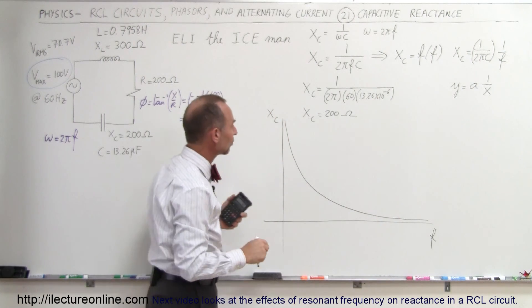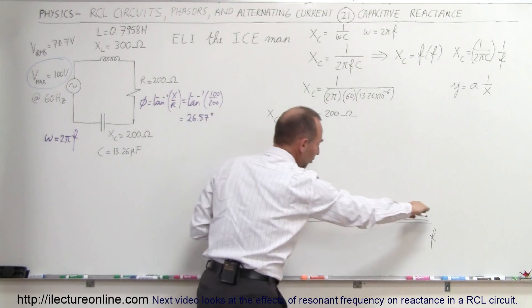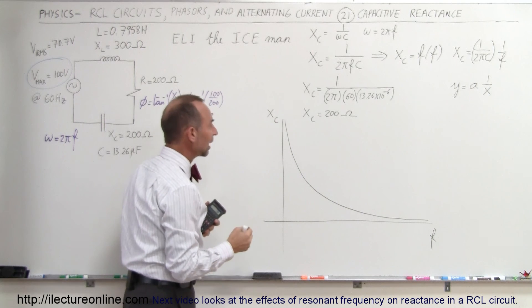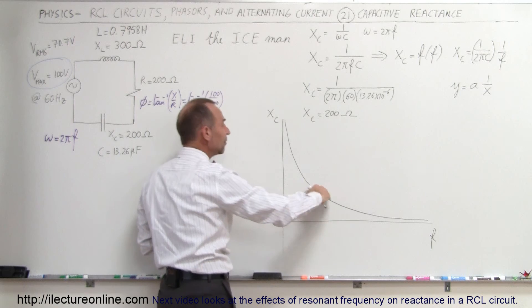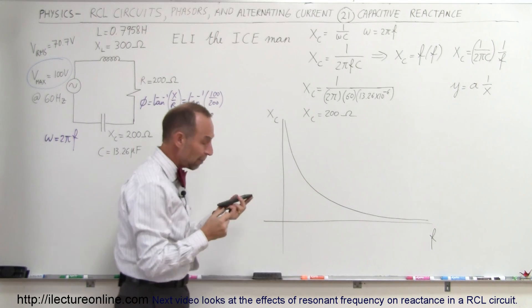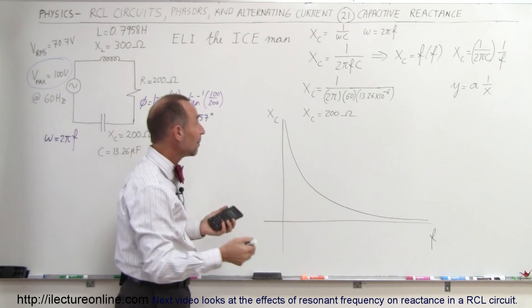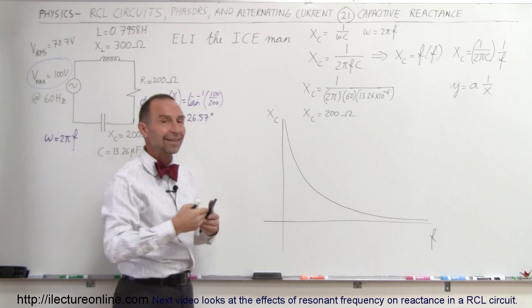It's a 1 over x type of equation, so the curve looks like this. With increasing frequency, the reactance of the capacitor goes down. With decreasing frequency, the reactance goes up. And when f becomes zero, the reactance is infinite.